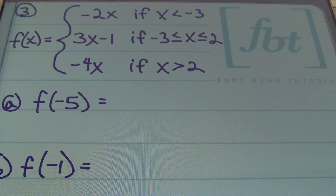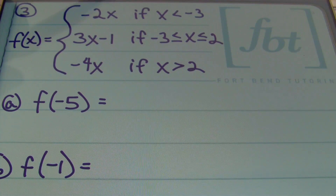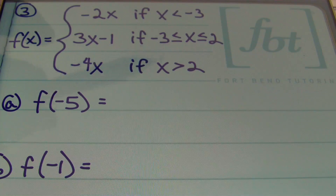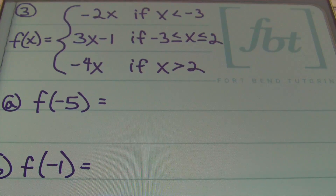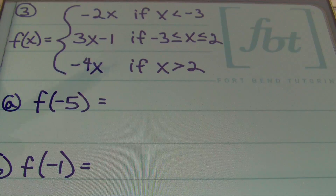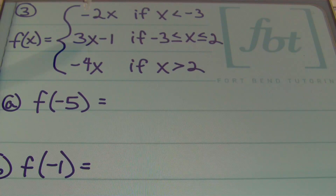Moving along to problem number three. F of x equals negative two x whenever x is less than negative three; f of x equals three x minus one whenever x is between and including negative three and two; and f of x equals negative four x whenever x is greater than two. This piecewise function has three separate rules based on the domain.